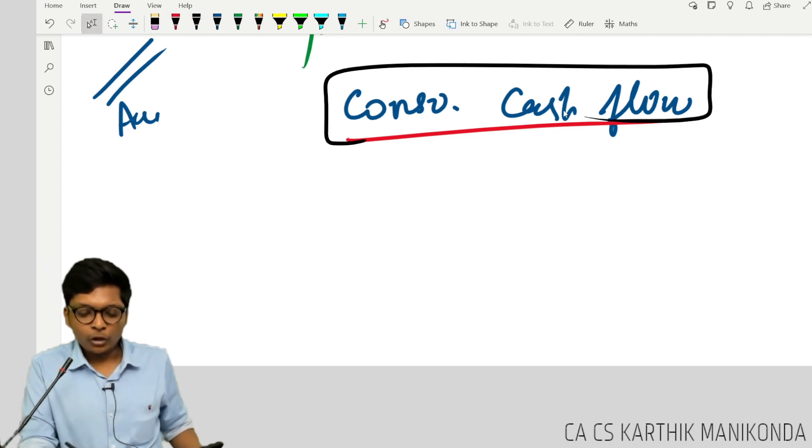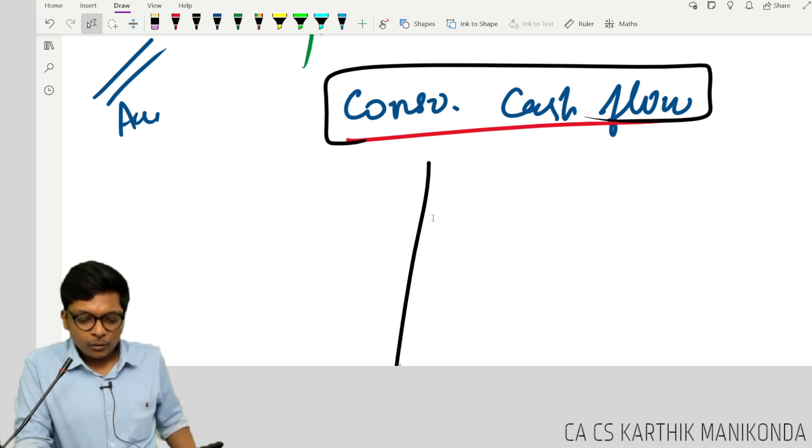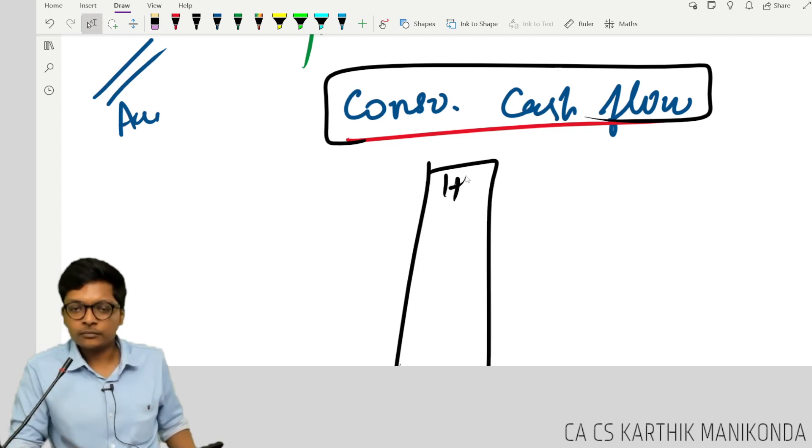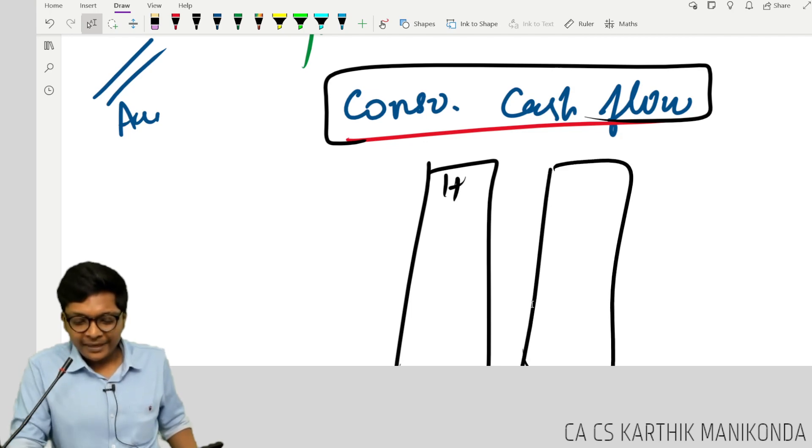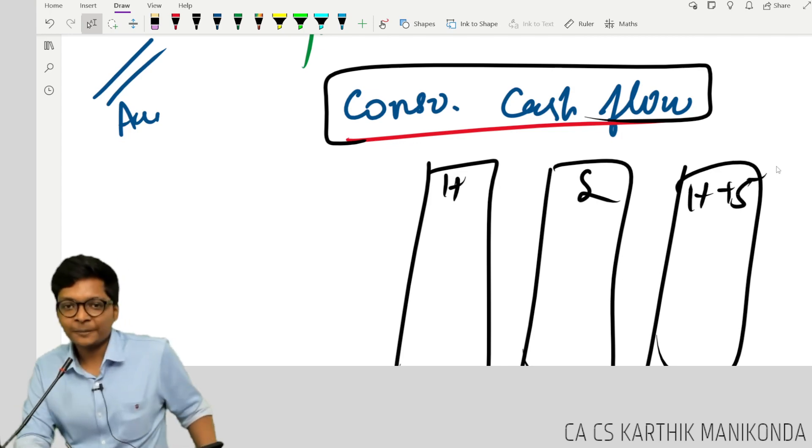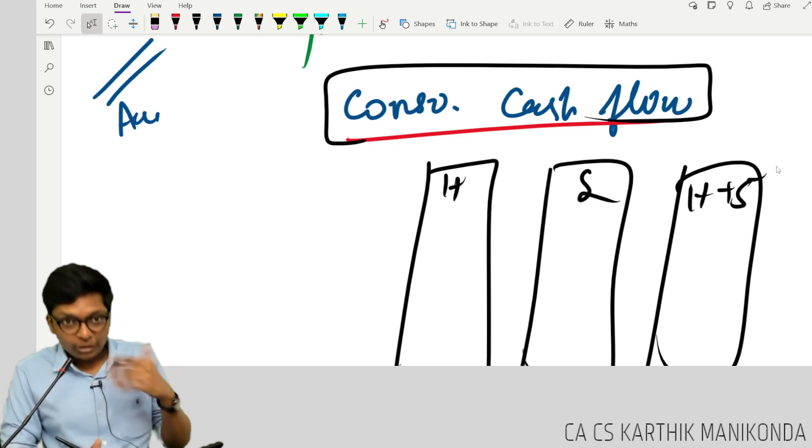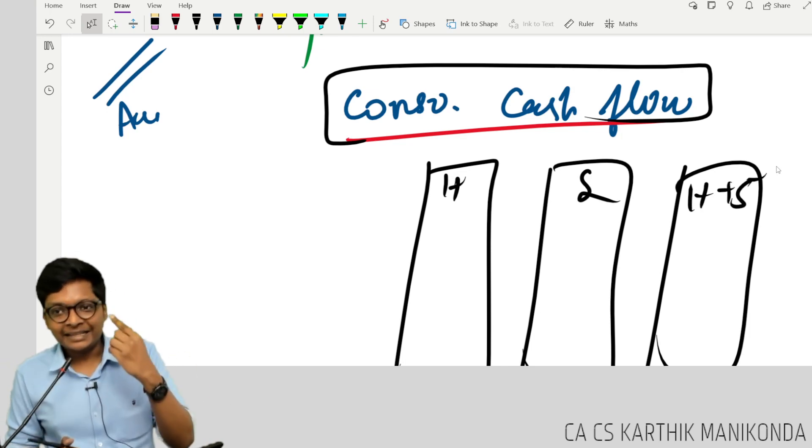Now follow guys, what do you mean by consolidated cash flow? They would have already prepared cash flow for holding, they would have already prepared cash flow for subsidiary. Now I have to prepare holding plus subsidiary. How to do sir? Simple. What is consolidation? Line by line addition.